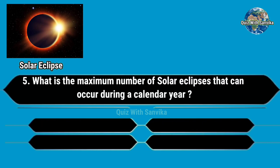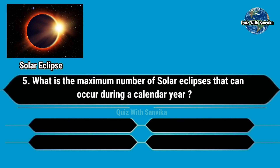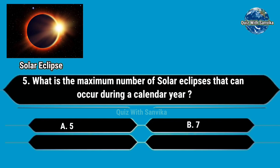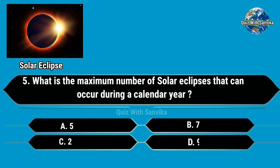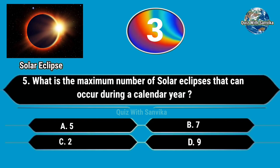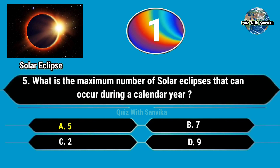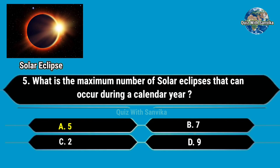What is the maximum number of solar eclipses that can occur during a calendar year? Options are A. 5, B. 7, C. 2, and D. 9. Answer is A. 5.